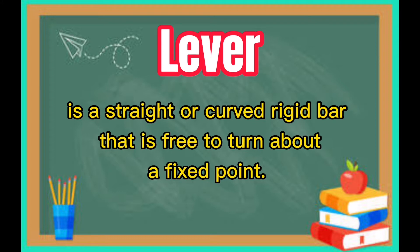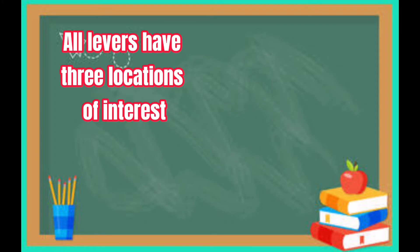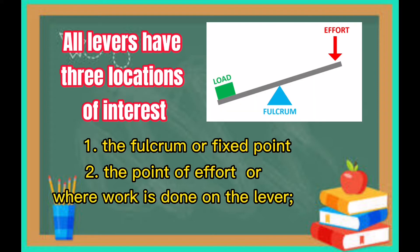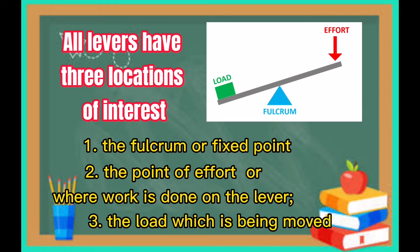Lever. It is a straight or curved rigid bar that is free to turn about a fixed point. All levers have three locations of interest: the fulcrum or fixed point, the point of effort or where work is done on the lever, and the load which is being moved.